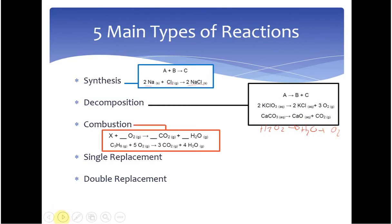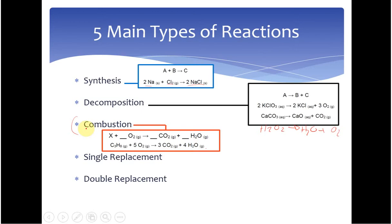Combustion is going to take some organic or carbon-containing compound, react it with oxygen, usually in the presence of a flame, to produce carbon dioxide and water vapor. Production of a gas is usually consistent with combustion. Here this is propane — just like in your gas grill, you burn it with oxygen and you make carbon dioxide and water vapor.